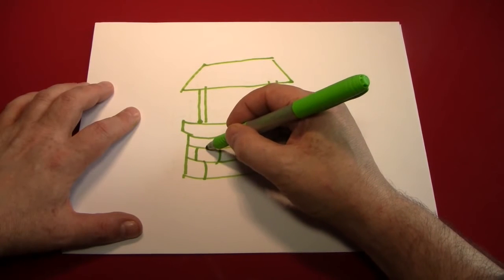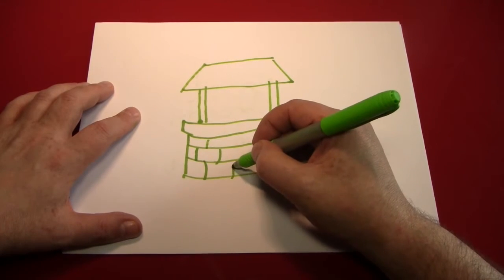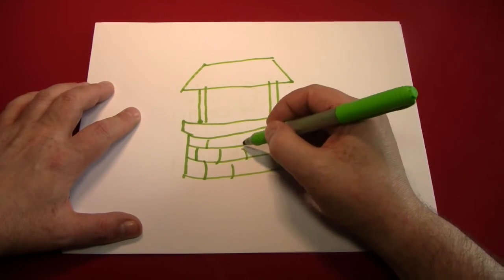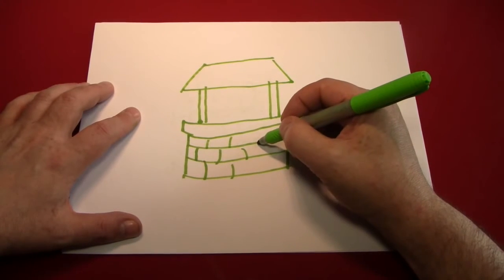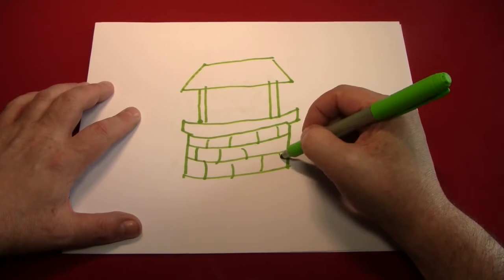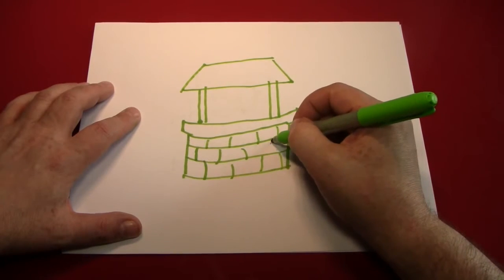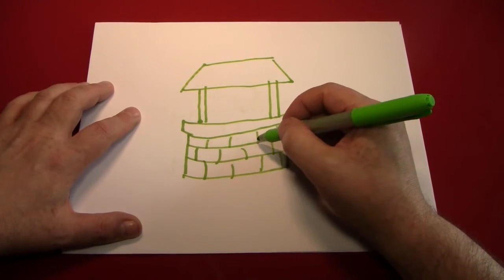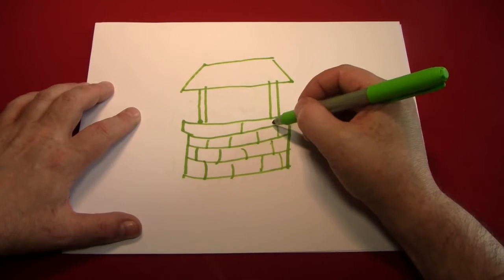And stones are a lot like bricks, except they're round or rounder than bricks. But you make them the same way in that you kind of stagger them. So, one, two, one, two, like that.